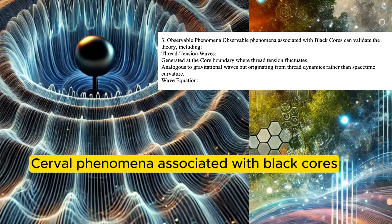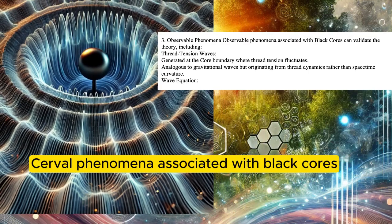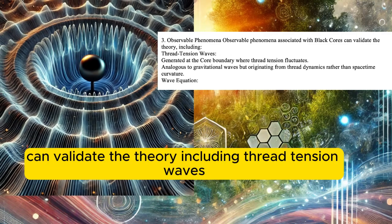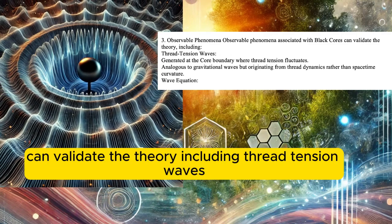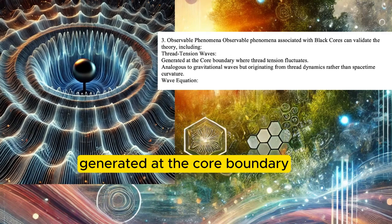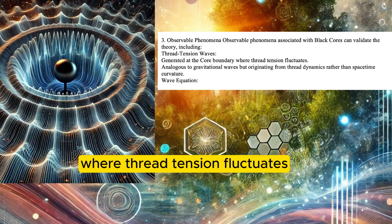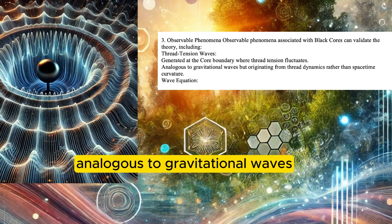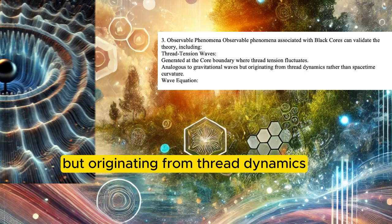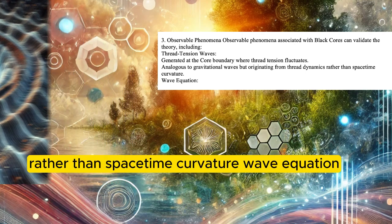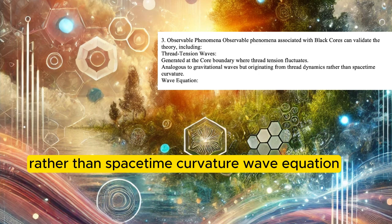Observable phenomena. Several phenomena associated with black cores can validate the theory, including thread tension waves generated at the core boundary where thread tension fluctuates, analogous to gravitational waves but originating from thread dynamics rather than space-time curvature.